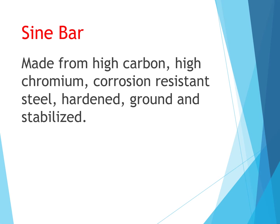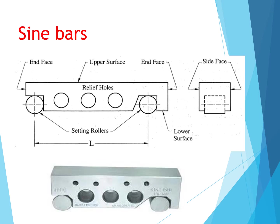There are two big cylinders of equal diameter at the two ends of the sine bar, as you can see in the diagram. The distance between the two cylinders is either 100 mm, 200 mm, or 300 mm. These are the three different specifications of sine bars available.